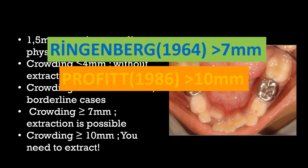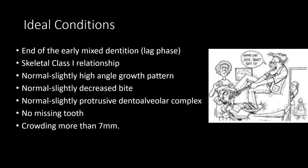According to Regenberg, 7 mm, and according to Profit, 10 mm are the limits to perform serial extraction. The ideal conditions are: end of the early mixed dentition, skeletal class I relationship, normally or slightly high-angle growth pattern, normal or slightly decreased bite, normal or slightly protrusive dento-alveolar complex, no missing tooth, and crowding more than 7 mm.